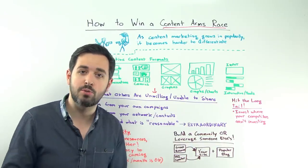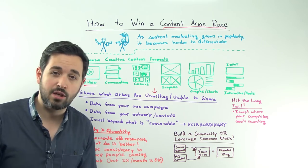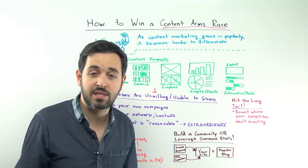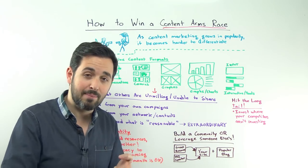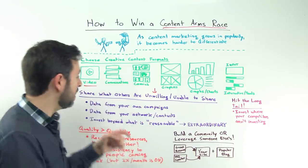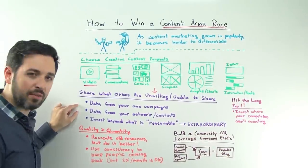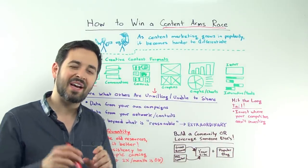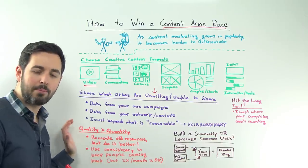Maybe they don't have the financial resources to, say, bring in expertise or to commission a public study or whatever it is that you have an advantage on. That could be your size, your nimbleness, your community, your creativity. Do those things that your competitors cannot or will not do, and that includes data from your contacts, but also investing beyond what is reasonable. So I like to think of this as the quality sort of beats quantity approach.